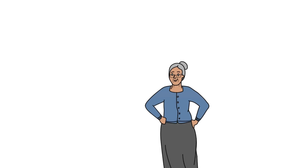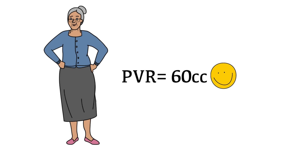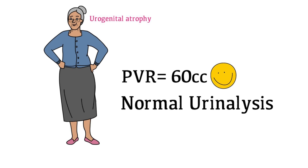Mrs. Watson's post-void residual is 60 cc's, which is not worrisome. Her urinalysis is negative for a urinary tract infection. Her dysuria could be secondary to urogenital atrophy.